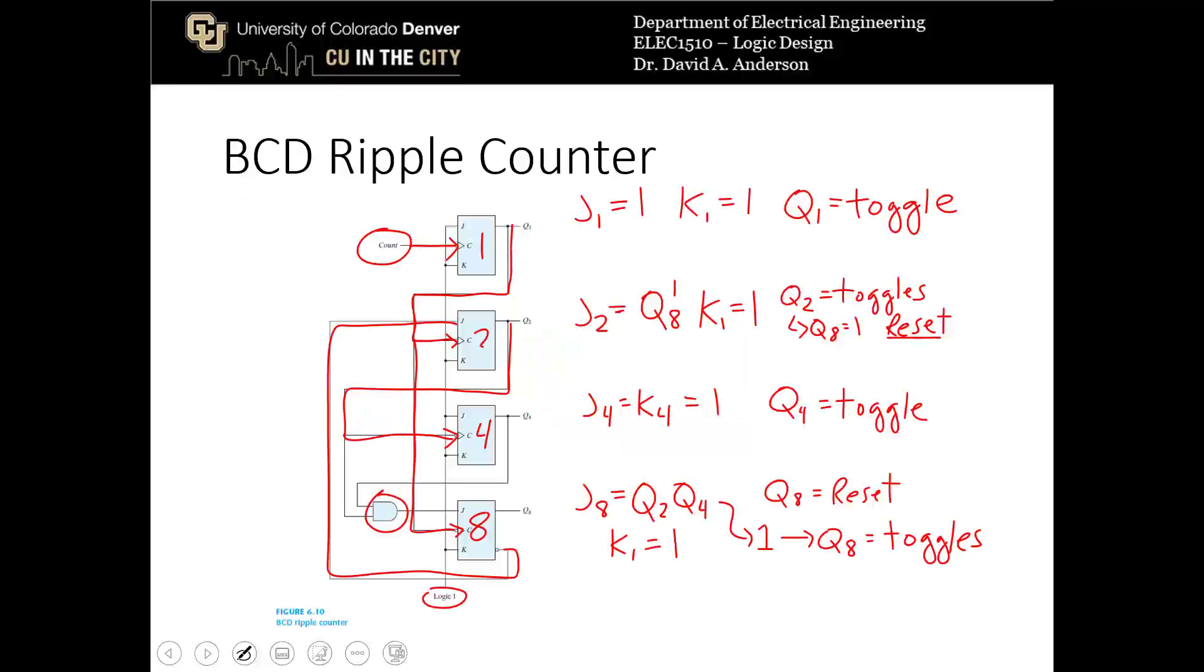So one of the homework assignments is going to be to simulate this circuit by designing it in Quartus and then making sure that it actually outputs the BCD ripple count.